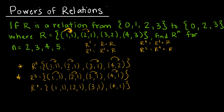And then R⁵ gives {(1,1), (2,1), (3,1), (4,1)} because I'm really just doing the exact same thing that I did last time.